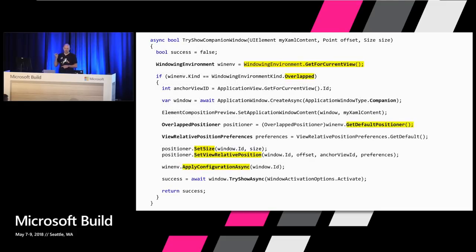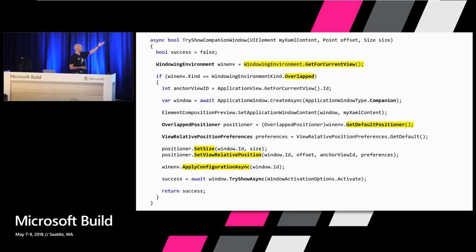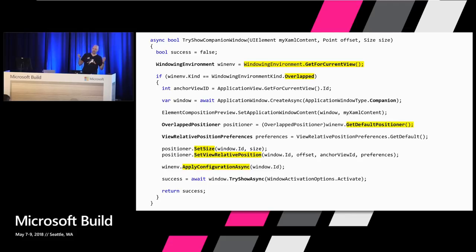So let's go back to that code. Now it becomes a little bit more code, but it's still pretty straightforward. In order to position that window, we have to get hold of our windowing environment — which is a get-for-current-view pattern. You then get hold of the default positioner, which is the overlapped positioner in our case because we're in an overlapped windowing environment. Once we have the positioner, we set the size and the relative position and we apply the configuration. The reason we have an apply configuration is that we want this to be atomic — so that even if you are changing properties on an already visible window, you don't see position, then size, or position, size, and then full screen happening. We want it all to be a single atomic operation to the user.